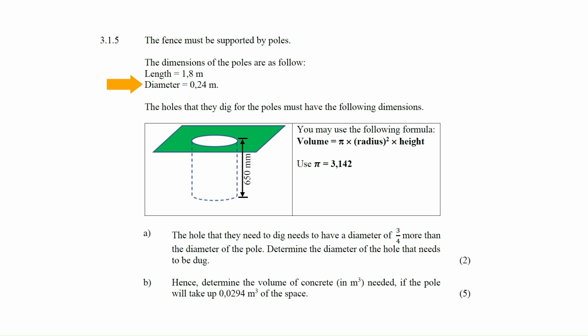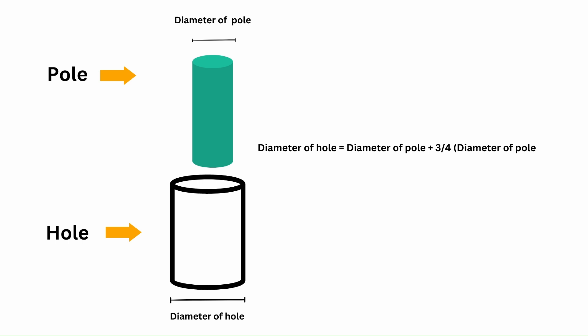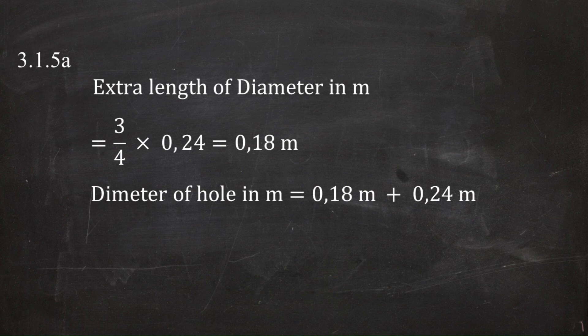The extra length of the diameter equals ¾ × 0.24 meters = 0.18 meters. This means the hole is 0.18 meters wider than the pole. Therefore, the diameter of the hole equals 0.18 + 0.24 = 0.42 meters.